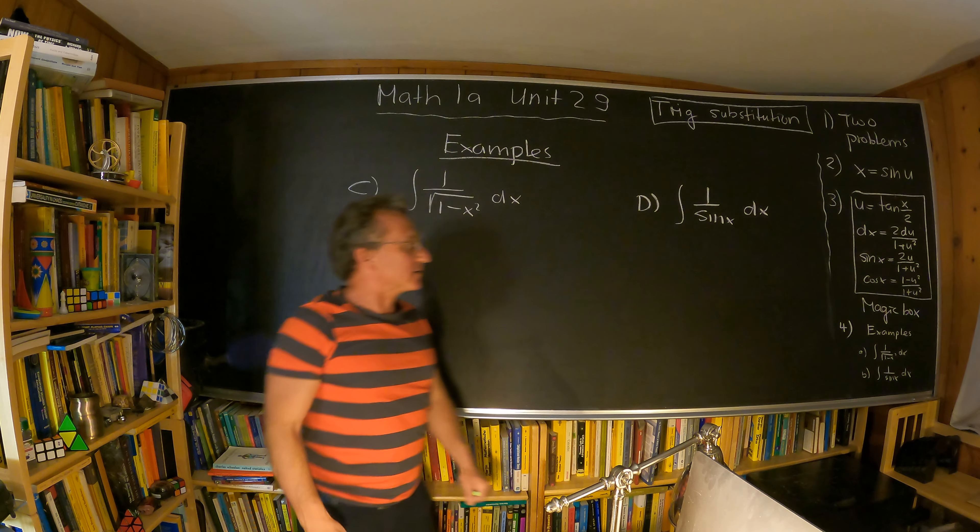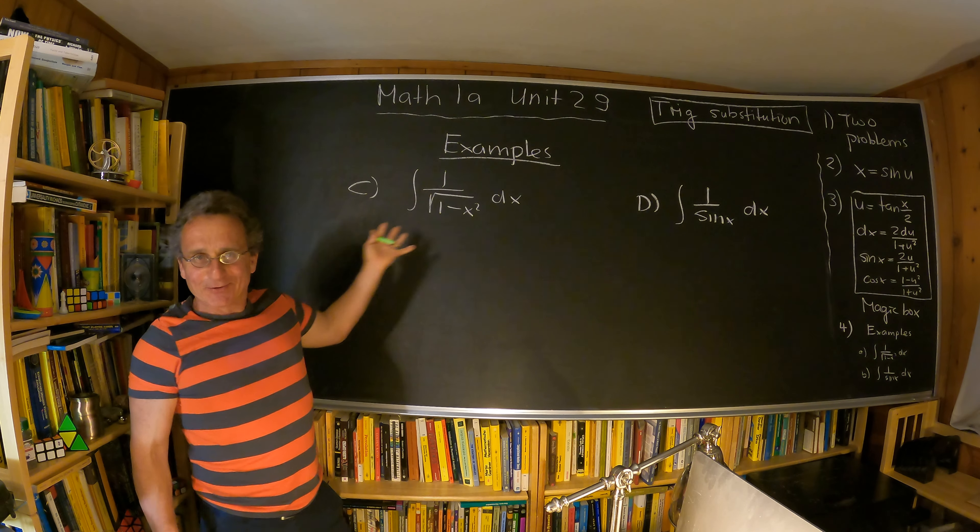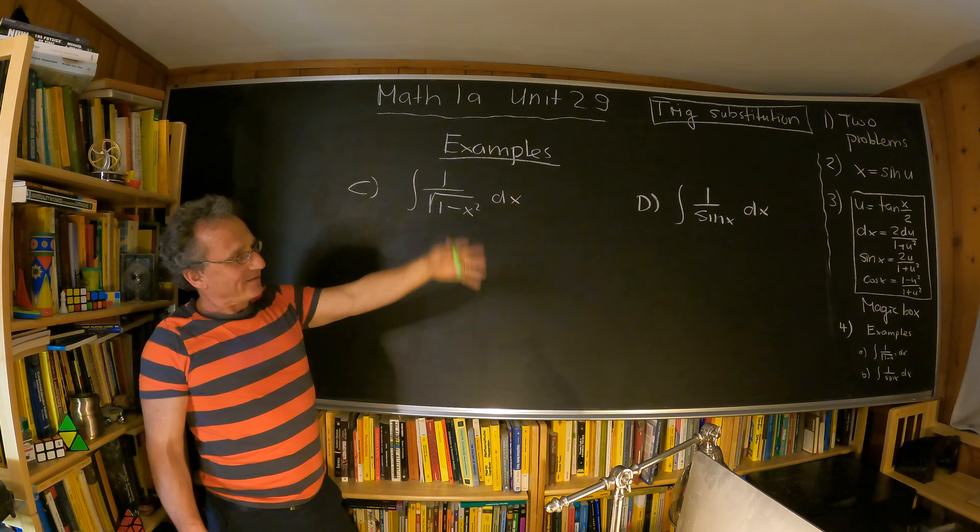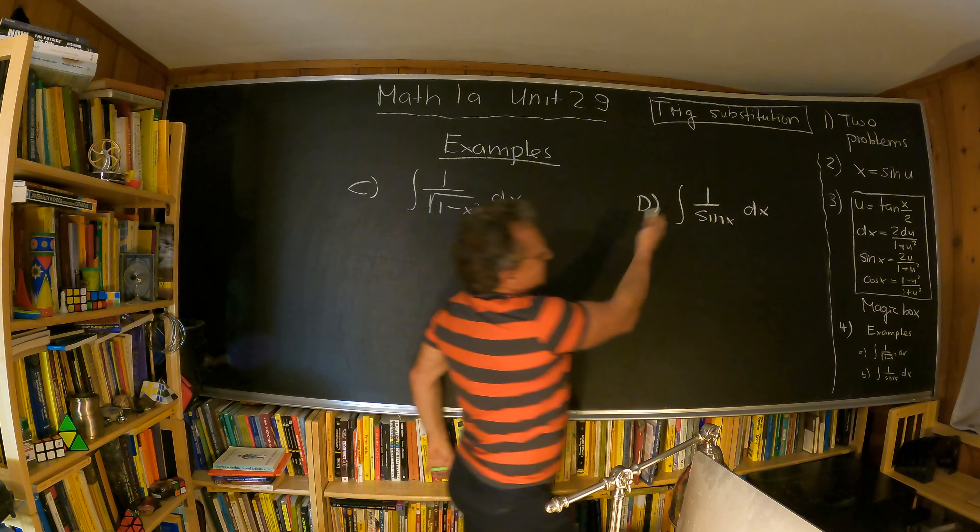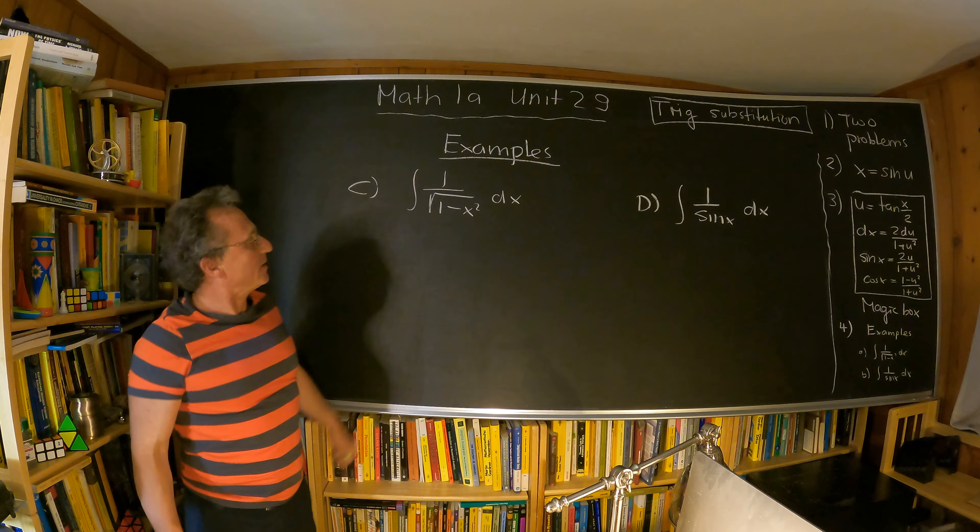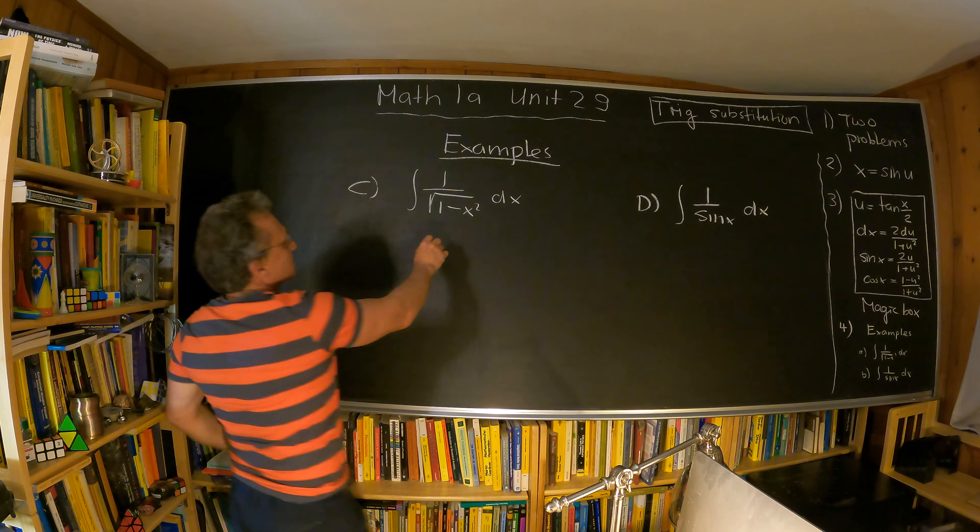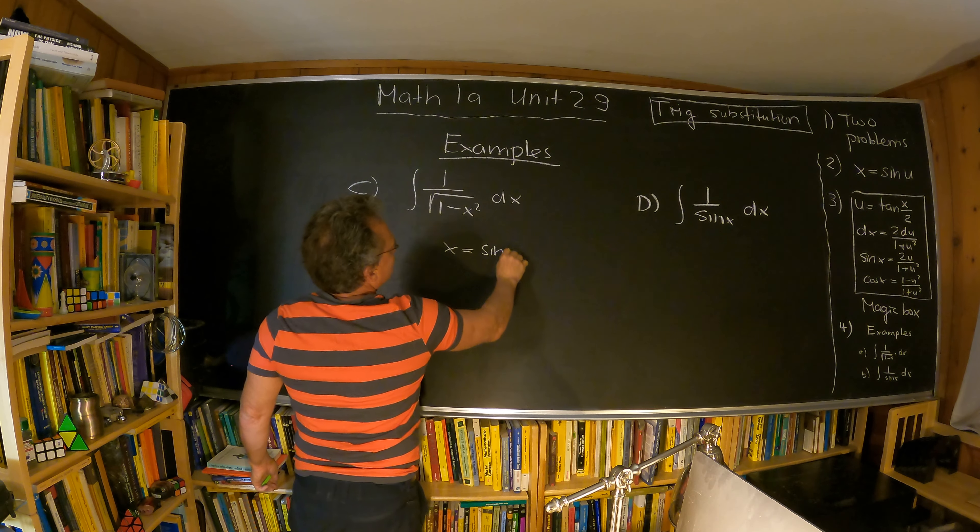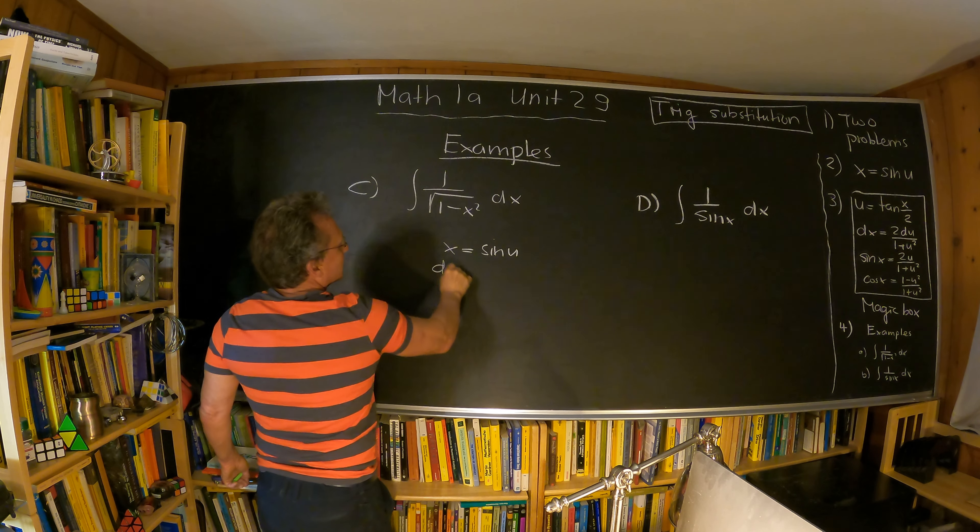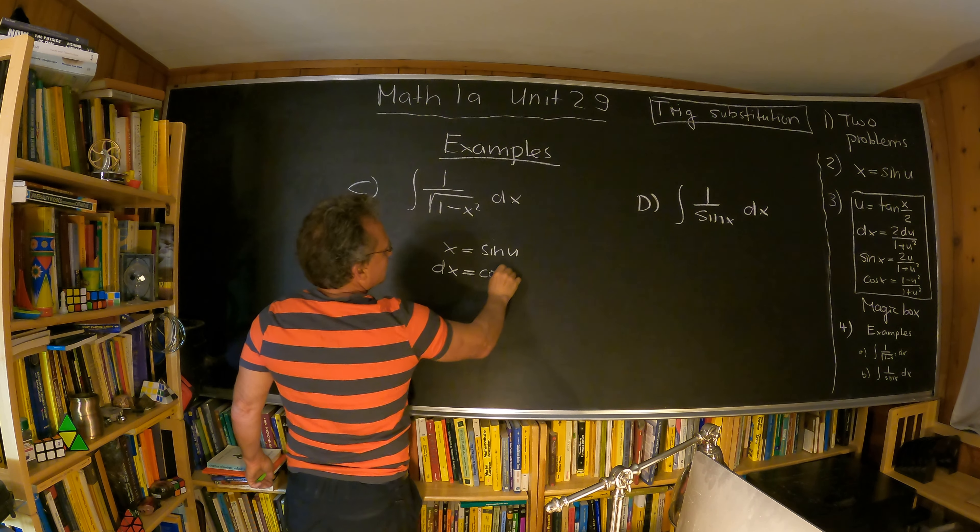Okay, we will look at more examples in class, but here are two examples which are fun. And once we have done these examples here at the beginning, this is exactly the same. So again here, we use x equals sine u, and dx equals cosine u du.